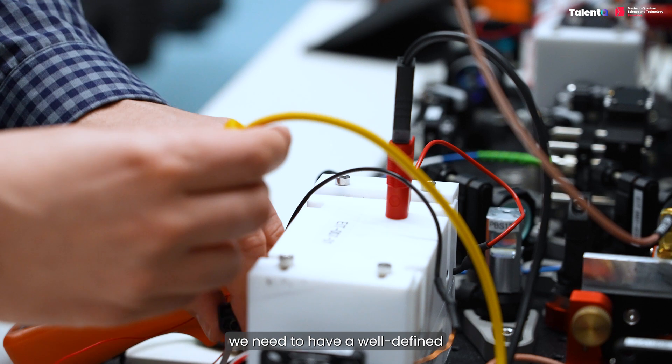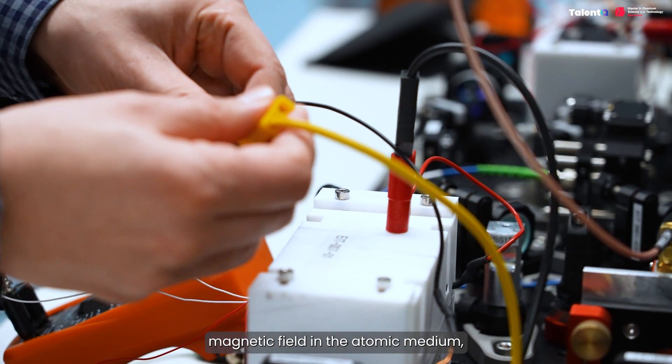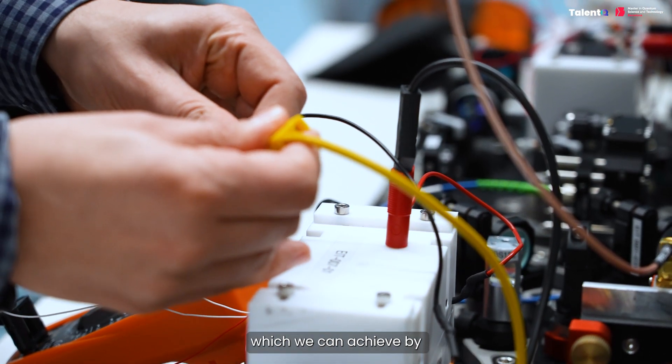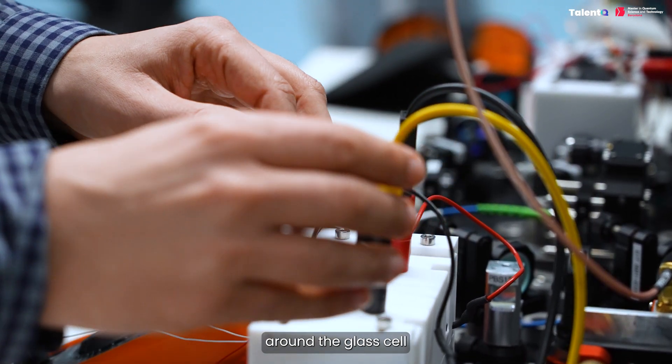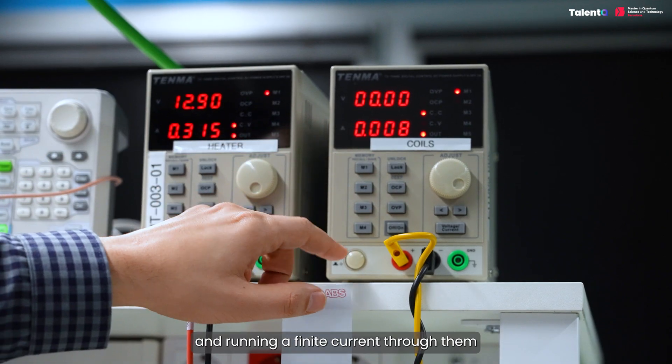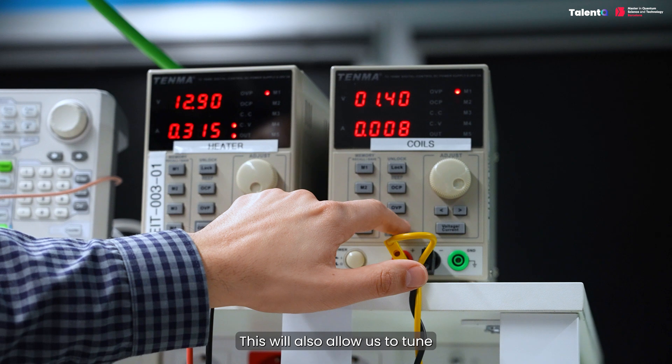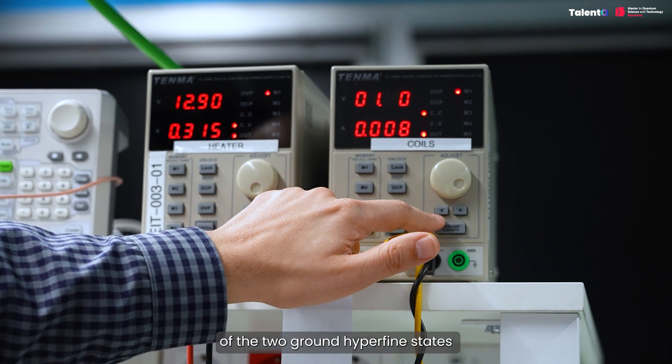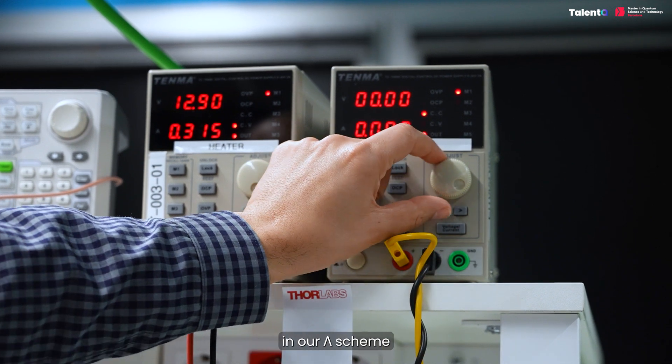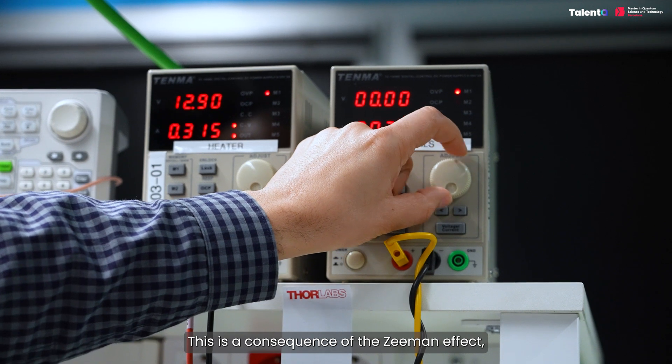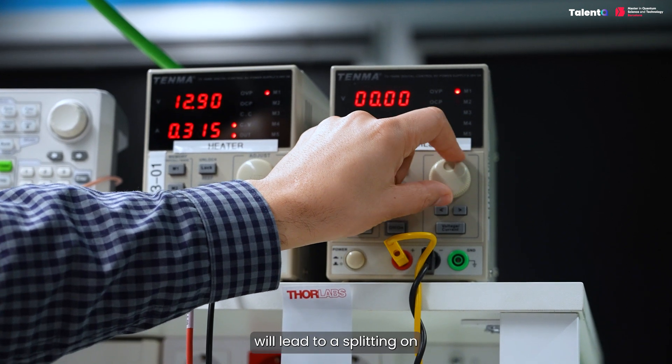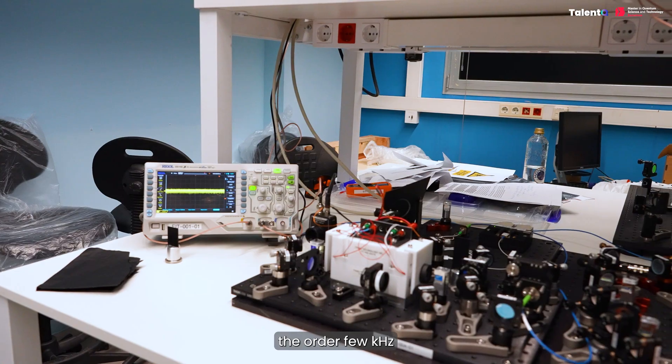Additionally, we need to have a well-defined magnetic field in the atomic medium, which we can achieve by using copper coils that we have wound around the glass cell and running a finite current through them. This will also allow us to tune the energy splitting of the two ground hyperfine states in our lambda scheme. This is a consequence of the Zeeman effect, which by introducing a field of few milligauss will lead to a splitting on the order of few kilohertz.